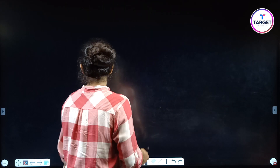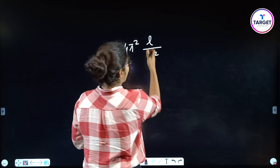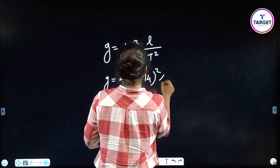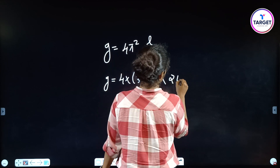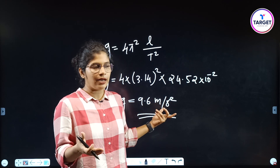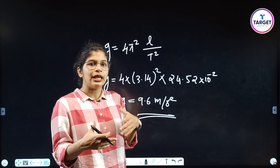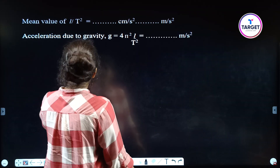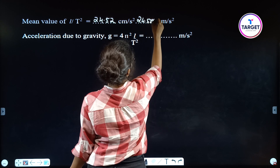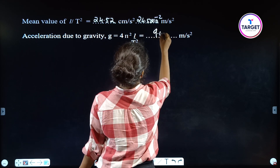The next step is to find g. G equals 4π²(L/T²), and we already have the L/T² value. So g = 4 × (3.14)² × 24.52 × 10⁻². This gives approximately 9.6 meters per second squared. So g = 9.6 m/s².